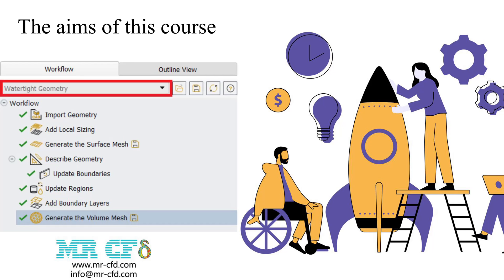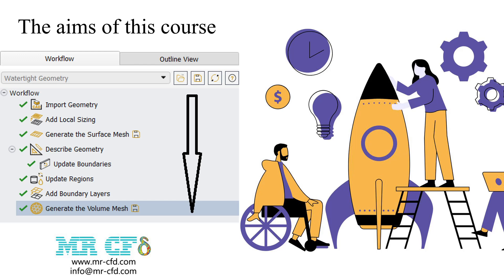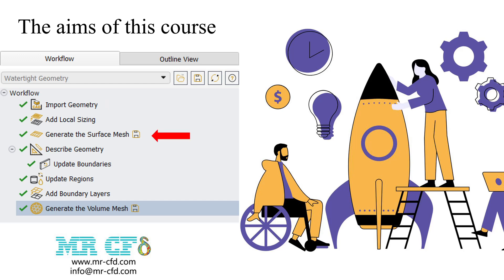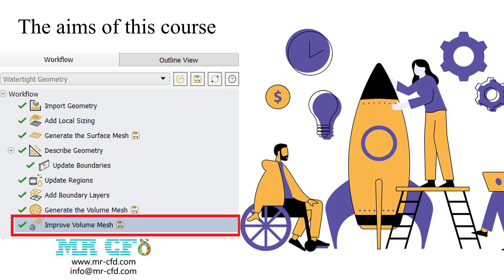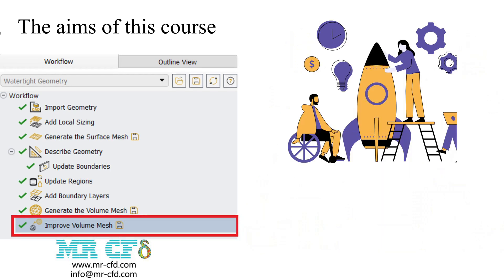This course will teach you how to set up and generate meshes using ANSYS Fluent Meshing tools. We'll focus on the crucial watertight geometry workflow, which ensures your geometry is closed and ready for meshing. The tool guides users through importing geometry, defining mesh parameters, generating surface and volume meshes, and improving mesh quality, all with simple user-friendly controls.